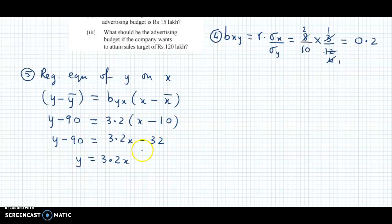This equals byx, which is 3.2, times (x - 10). Taking 90 to the other side, we have y - 90 = 3.2x - 32. y = 3.2x + 58. We have obtained the y on x regression equation.